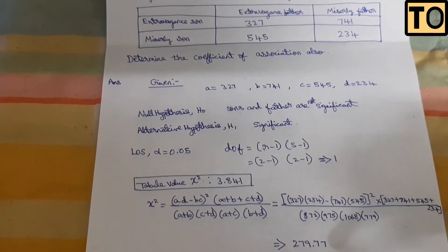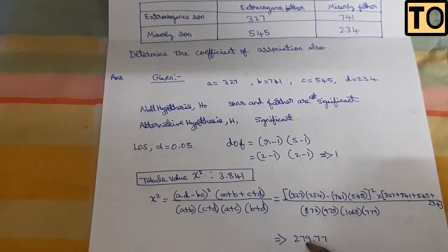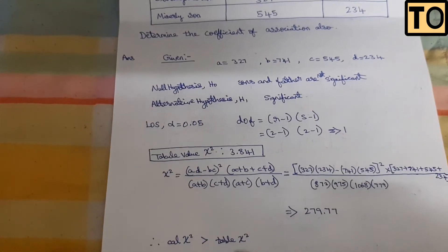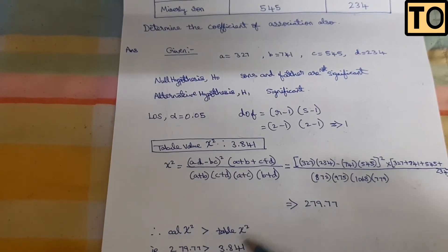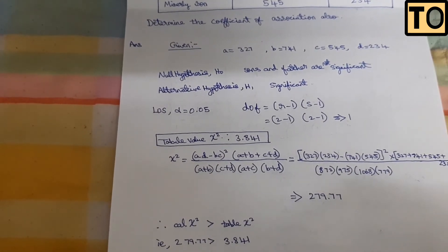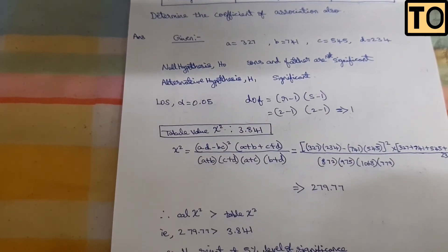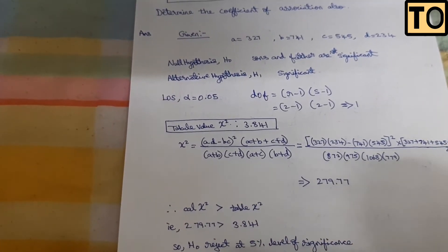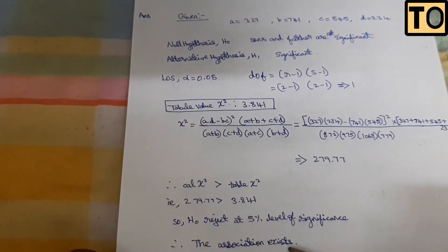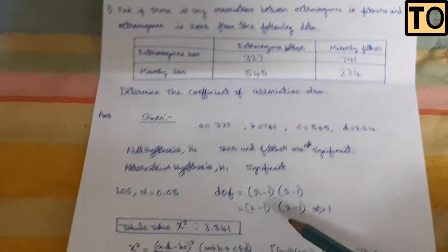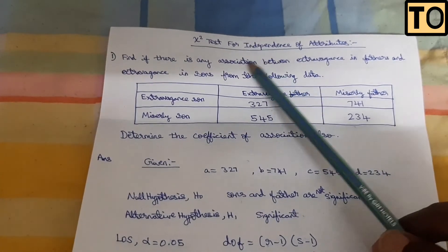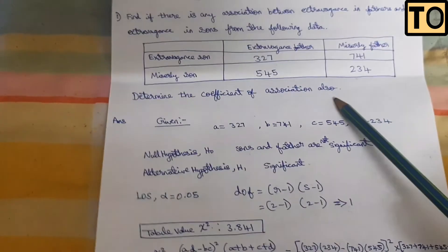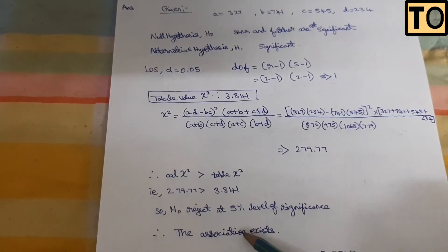After substituting and solving, the calculated value is 279.77. Since 279.77 is greater than the table value of 3.841, we reject the null hypothesis at the 5% level of significance. Therefore, a significant association exists between extravagance in father and son.